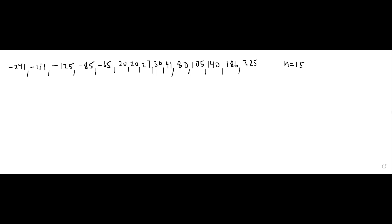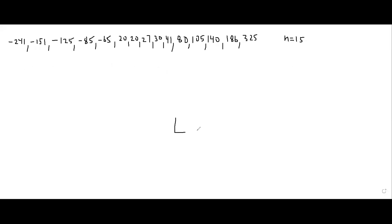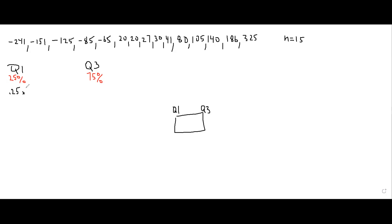I will recall how we produce the box plot — the picture of the box with the first and third quartiles. I need to find Q1 and Q3. For Q1, I take 25% of the sample elements — that's the 25th percentile. For Q3, that's 75%. So I take 0.25 and multiply by the sample size n, which is 15, and get 3.75.